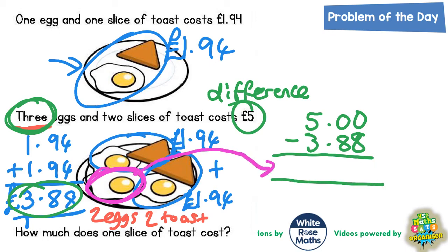Let's work that out. £0 take away £8 — we can't do that, so we borrow. But we can't borrow from this £0 because there's nothing there, so we borrow from the £5. Cross the £5 out, it becomes a £4, and the one we've borrowed turns the first £0 into £10. We still can't do £0 take away £8, so we borrow from the £10 — cross it out, make it a £9, and the one we've borrowed makes it £10. £10 take away £8 is £2, £9 take away £8 is £1, £4 take away £3 is £1. So that extra egg must cost £1.12.